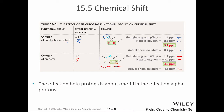The effect on beta protons is about one-fifth the effect on alpha protons. Going back to the example of ethanol, the two protons alpha to the oxygen of the alcohol produce the alpha effect, but for the three protons on the methyl group, which are beta to the oxygen of the alcohol, I add one-fifth of 2.5. For my methyl protons, I start with the baseline of 0.9 parts per million and add 0.5 parts per million to it.